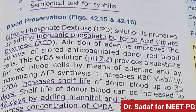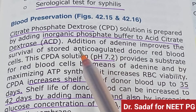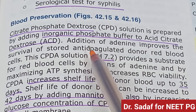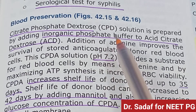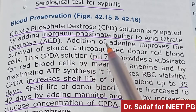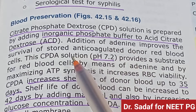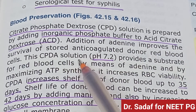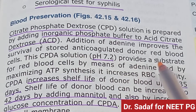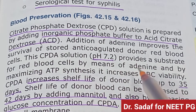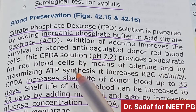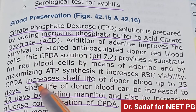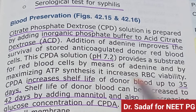Blood preservation: citrate phosphate dextrose (CPD) solution is prepared by adding inorganic phosphate buffer to acid citrate dextrose. Addition of adenine improves the survival of stored anticoagulated donor red blood cells. CPD solution with pH 7.2 provides substrate for red blood cells by means of adenine and ATP synthesis, increasing RBC viability.